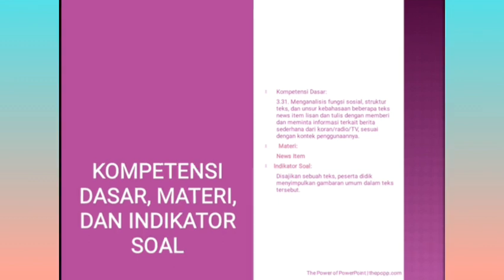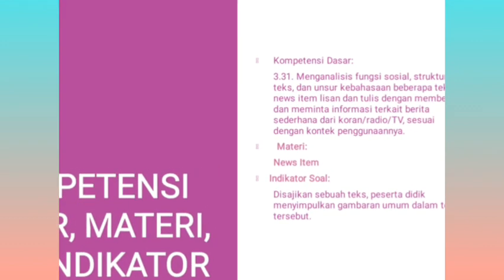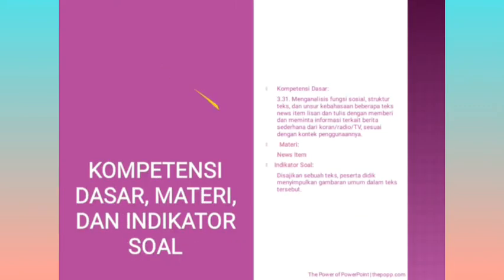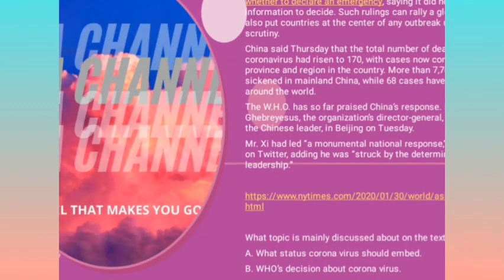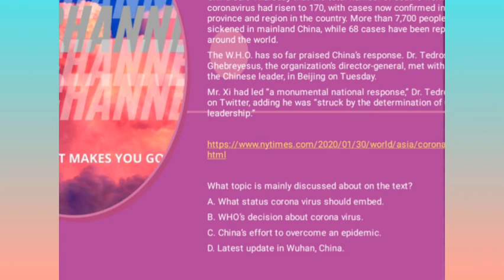Soal ke-5. Kompetensi dasar 3.31: menganalisa fungsi sosial, struktur teks, dan unsur kebahasaan beberapa teks. Langsung tunjukkan perhatian pada pertanyaan, bukan teks atau dialognya, untuk menghemat waktu. Pertanyaannya: 'What topic is mainly discussed in the text?'